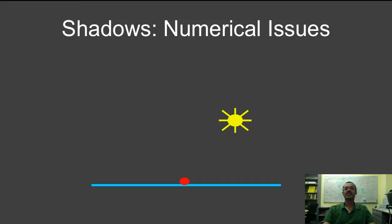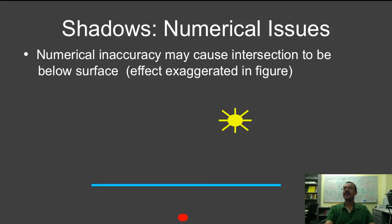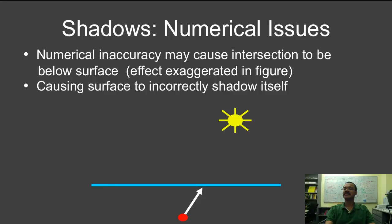There are of course numerical issues with computing shadows. What I want is that the ray goes to the light source and is unblocked, but what may end up happening is for numerical reasons, and of course I've exaggerated this, the ray may actually fall below the surface, and then the surface may incorrectly end up shadowing itself.